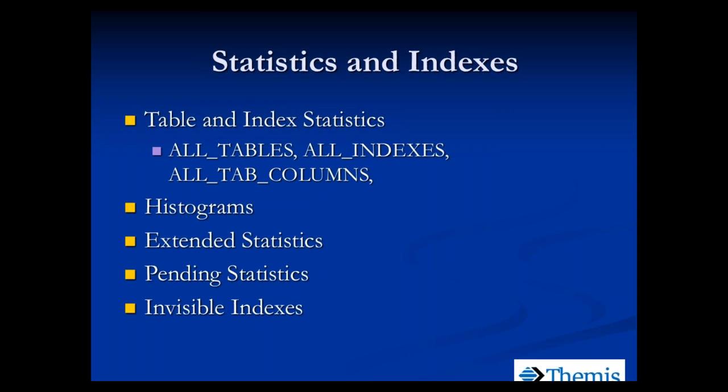Statistics and indexes are what most people are familiar with. The optimizer uses statistics to understand how much data it's dealing with and considers indexes like an index in the back of a reference book. Histograms show the distribution of data — what percentage is department 20 versus department 30, whether it's even or uneven — which can influence the optimizer's choice of execution plan.